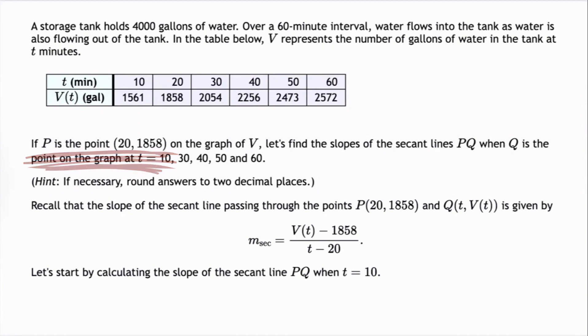let's find the slopes of the secant lines PQ when Q is the point on the graph at T equals 10, T equals 30, T equals 40, T equals 50, and T equals 60.